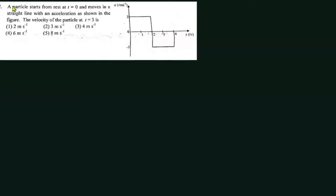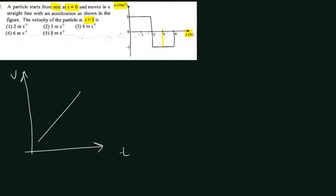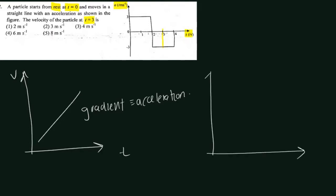Moving on to the next problem. A particle starts from rest at t equals zero and moves in a straight line with an acceleration as shown in the figure — that is, an AT graph is given. We need to find the velocity at the third second. If we are given a VT graph, the gradient gives us acceleration. So conversely, from an AT graph, we need the area.